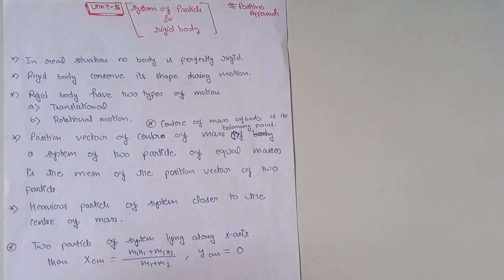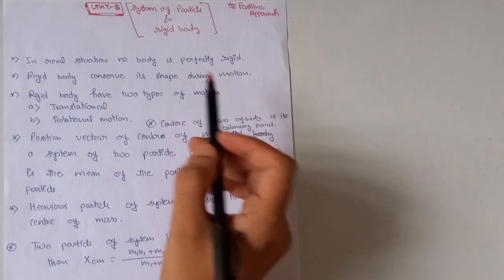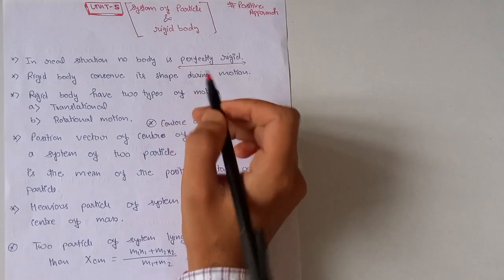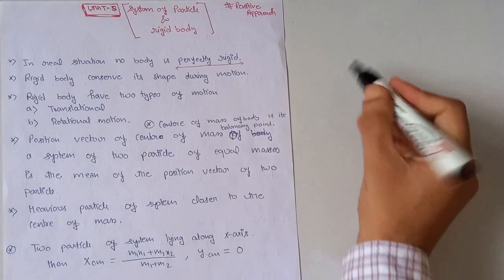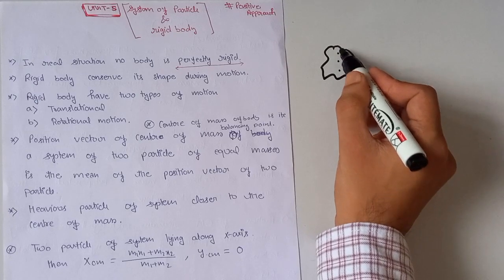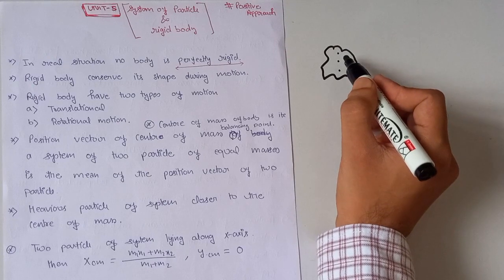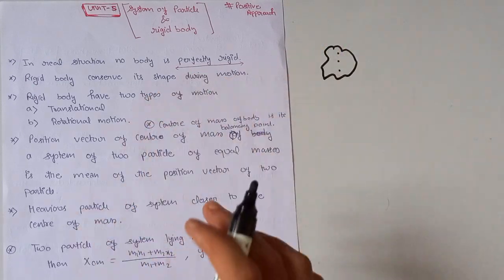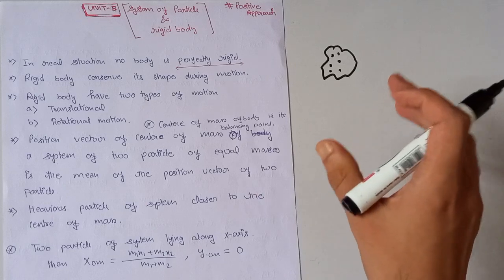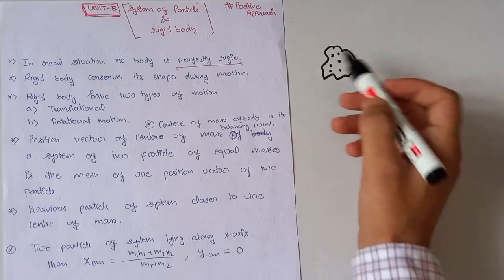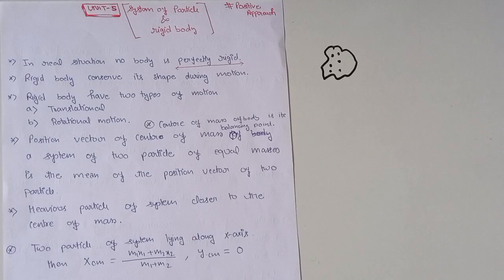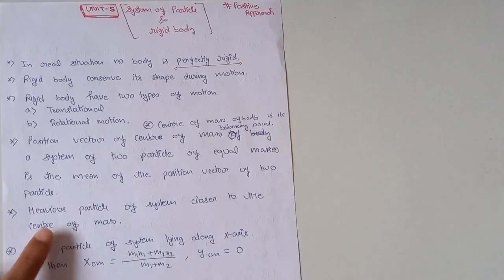Our first important key point is: in real situations, no body is perfectly rigid. A perfectly rigid body is one whose every constituent particle remains at the same distance from one another when subjected under any external force. That body is called a perfectly rigid body. So in real situations, no body is perfectly rigid.